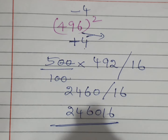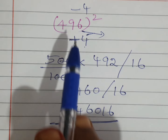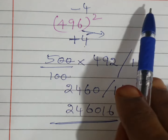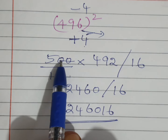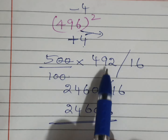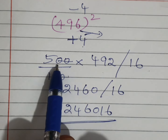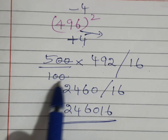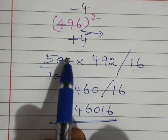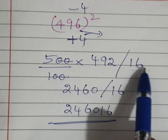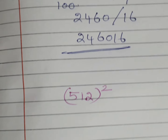What we need to do: make the number nearer to 100. 496 is 4 less than 500, so add plus 4 and minus 4. 496 plus 4 is 500, 496 minus 4 is 492, and 4 square is 16. Put a slash and write 16. Always divide by 100 — since we are dividing by 100, we consider both digits, and the two zeros get cancelled. 5 into 492 is 2460, giving us 246016.